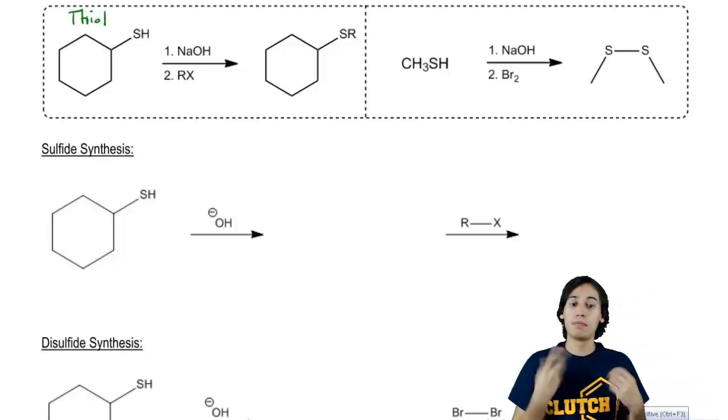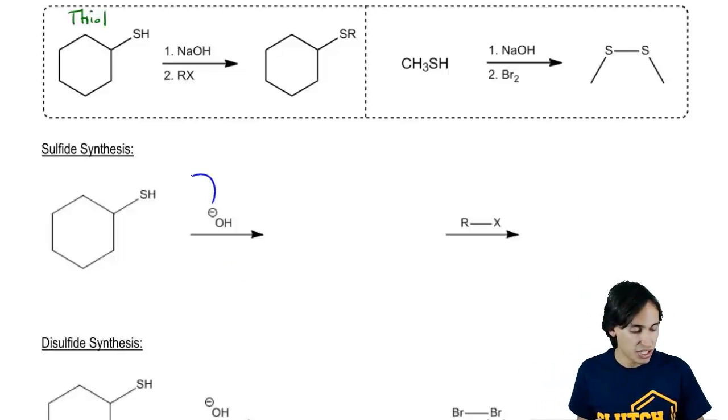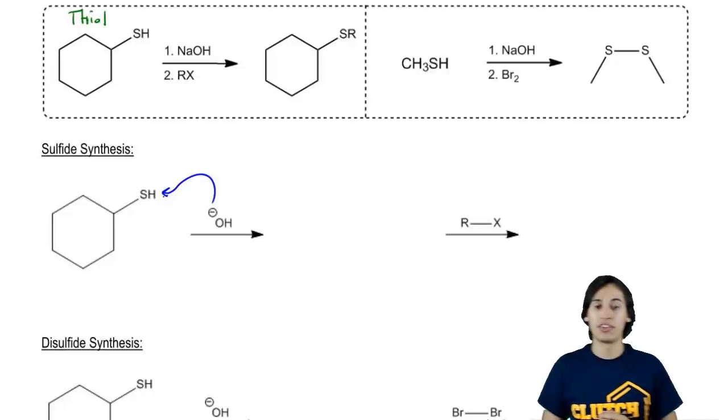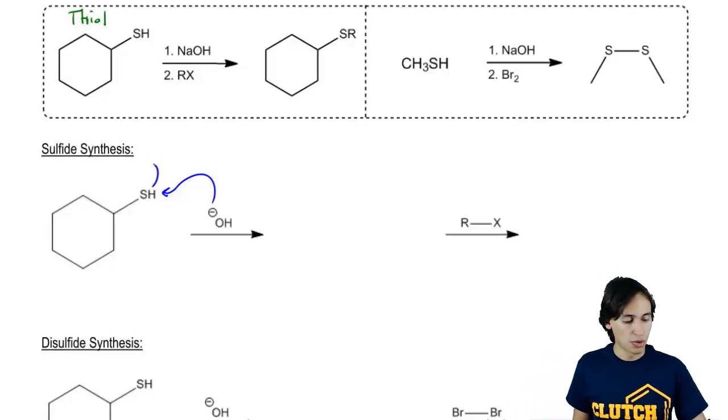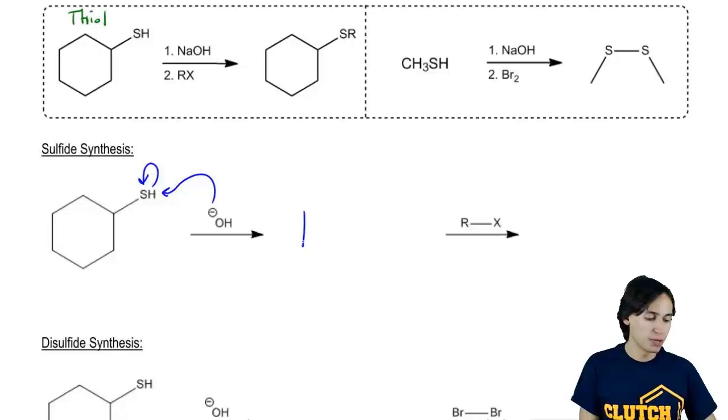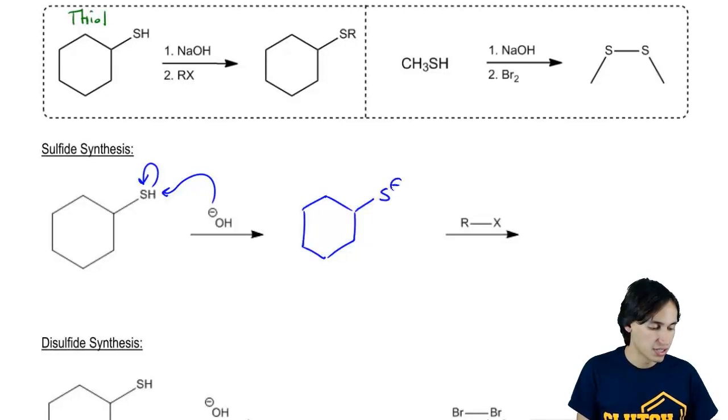So in my first step, my base is going to grab the acidic hydrogen of my thiol. Obviously the hydrogen doesn't want to have two bonds. So I make a bond, I break a bond and I wind up getting – what is this called? My negative charge on my S. This is my thiolate anion.